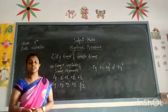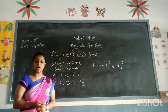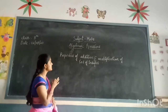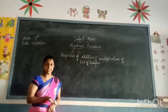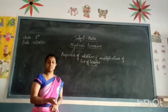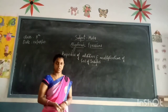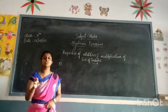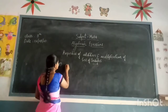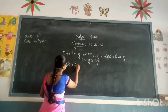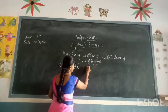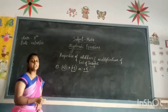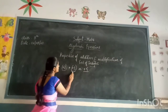Now let us see the properties of addition and multiplication of integers before solving polynomial problems. Integers are: minus 1, minus 2, minus 3, 0, plus 1, plus 2, plus 3, and so on. First property: addition of a positive integer with a positive integer gives a positive integer. For example, plus 2 plus plus 3 gives 5 — positive only. Plus and plus gives plus.